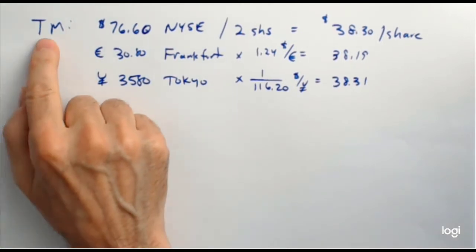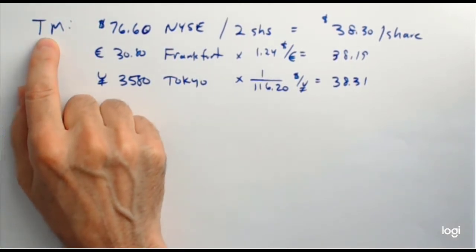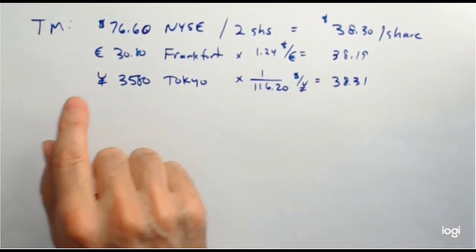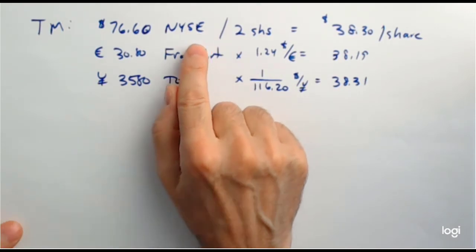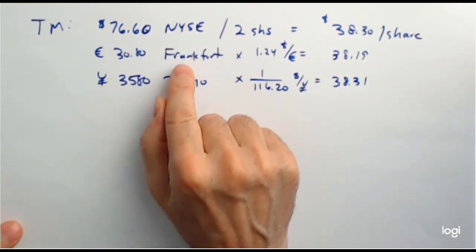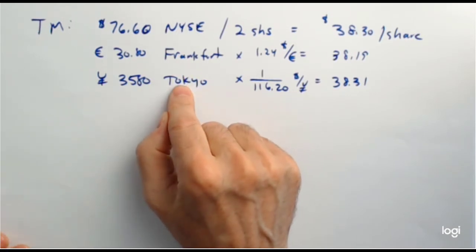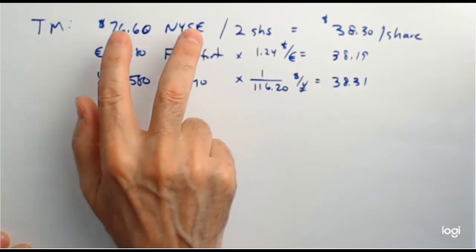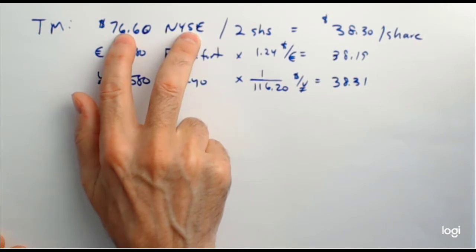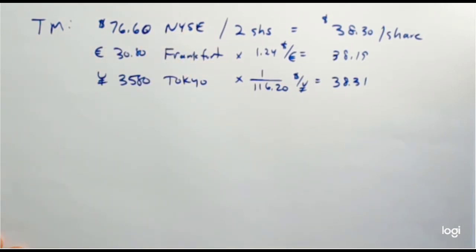Toyota's stock trades on the New York Stock Exchange, in Germany in Frankfurt, and in Tokyo because it's a Japanese company. When you buy Toyota in the U.S., you buy it through what's called an ADR — an American Depository Receipt — and you actually get two shares when you buy Toyota in this country.